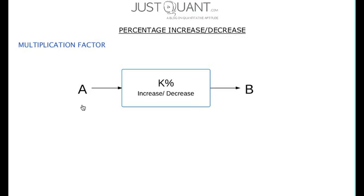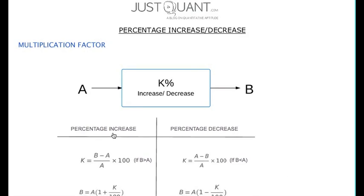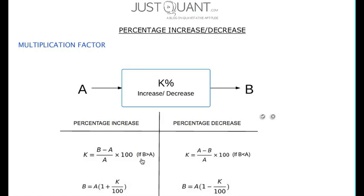If a quantity A is increased or decreased by k percent, we get the quantity B. Now the percentage increase or decrease can be calculated as shown. If B is greater than A, we have a percentage increase, calculated by B minus A, divided by A, multiplied by 100. If B is less than A we have a percentage decrease, calculated by A minus B, divided by A, multiplied by 100.